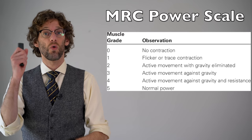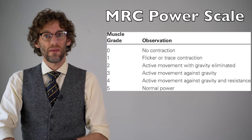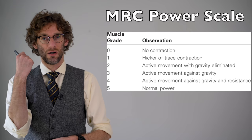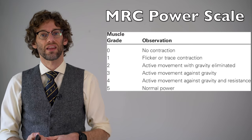Grade three power is movement against gravity without resistance — for example, the patient can flex and extend their arm, but if I place my hand there they wouldn't be able to do it against me. With grade two they can move but not against gravity; they couldn't pick up their arm, but if held they could move it side to side. With grade one they can't move the limb at all but are able to contract the muscle. Grade zero is no movement at all.